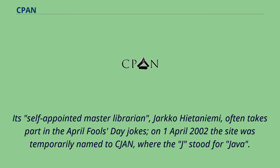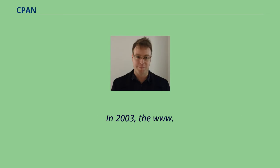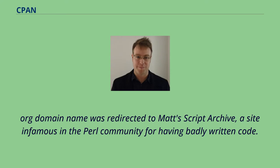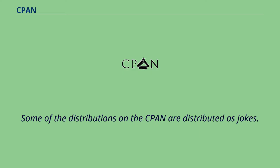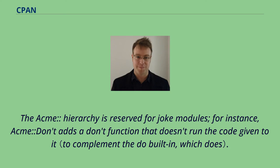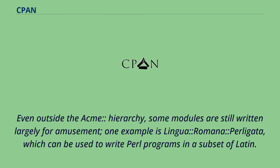On April 1, 2002, the site was temporarily named JCPAN, where the J stood for Java. In 2003, the www.cpan.org domain name was redirected to Matt's Script Archive, a site infamous in the Perl community for having badly written code. Some of the distributions on the CPAN are distributed as jokes. The ACME hierarchy is reserved for joke modules. For instance, Acme::Don't adds a don't function that doesn't run the code given to it. Even outside the ACME hierarchy, some modules are still written largely for amusement. One example is Lingua::Romana::Perligata, which can be used to write Perl programs in a subset of Latin.